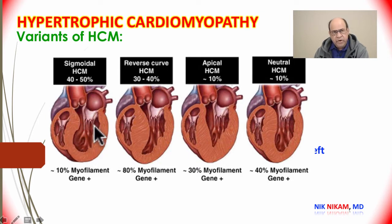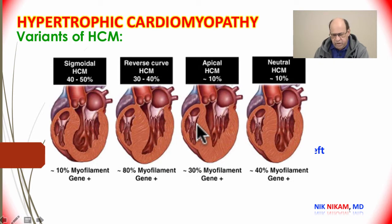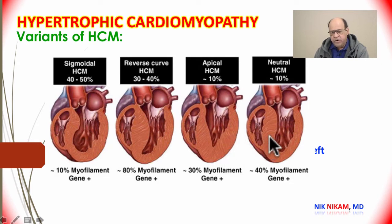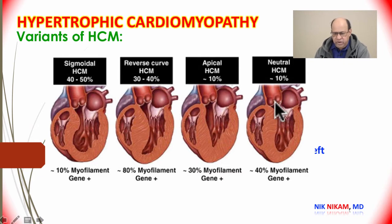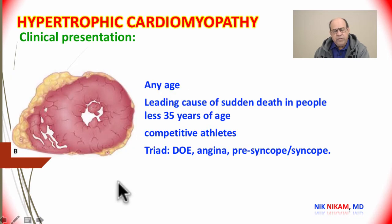Hypertrophic cardiomyopathy can manifest in many different forms. One is sigmoidal or uniform left ventricular hypertrophy. Another is asymmetrical septal hypertrophy. The third form involves increased thickness especially at the left ventricular apex. A different kind is the neutral hypertrophic cardiomyopathy, found in 10% of patients, with slightly increased thickness compared to the posterior wall.